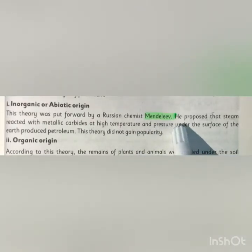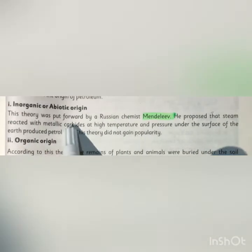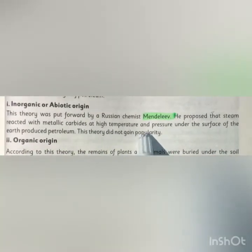The first theory is inorganic or abiotic origin. This theory was put forward by Russian chemist Mendeleev. He proposed that steam reacts with metallic carbides at high temperature and pressure under the surface of the earth to produce petroleum. Metallic carbides are compounds formed when metals react with carbon. However, this theory did not gain popularity.